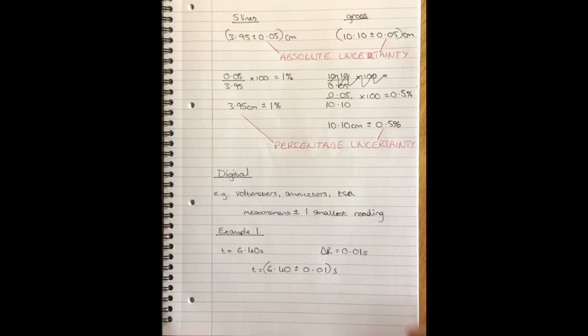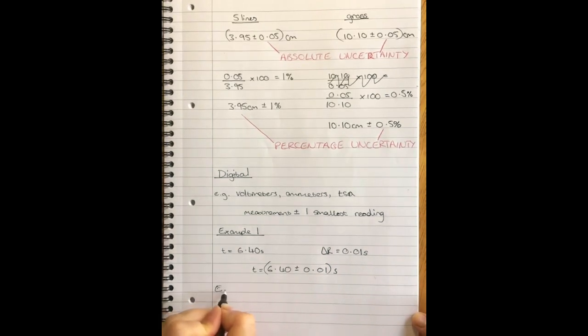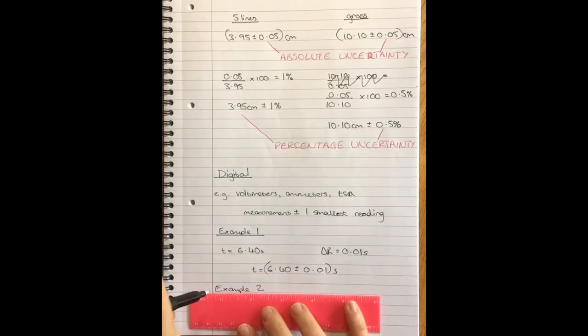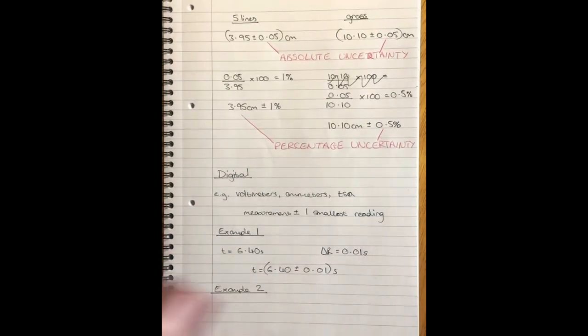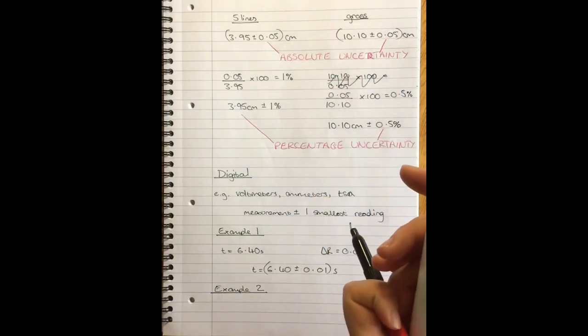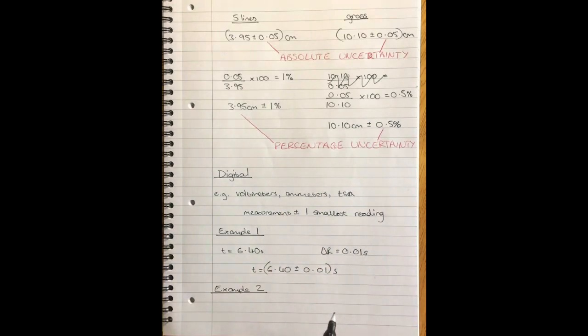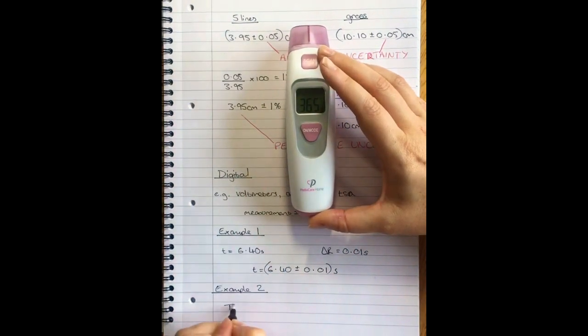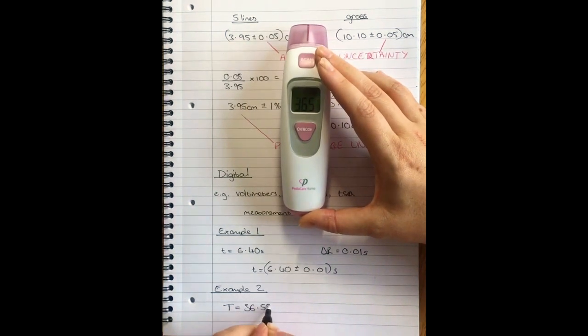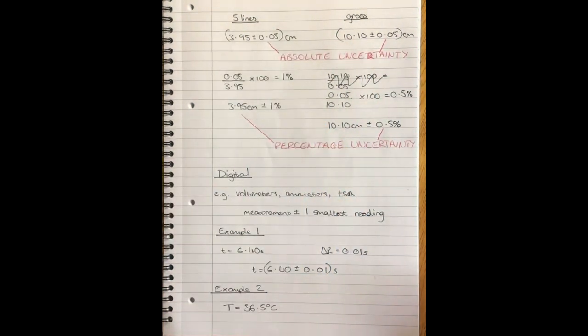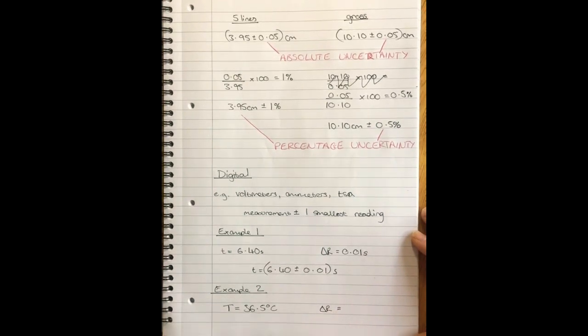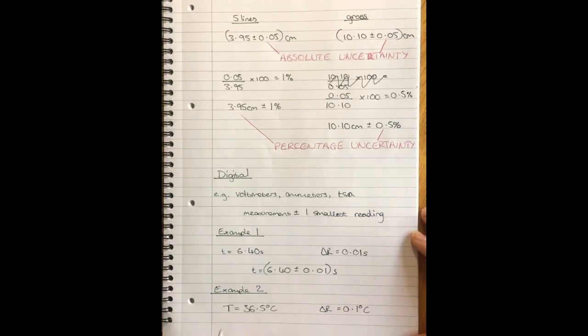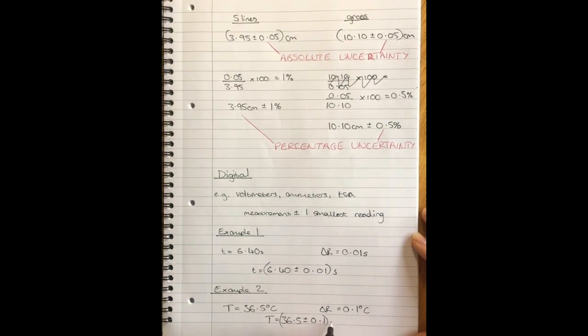Here's another example. I have another digital device here, it's an infrared thermometer. If I just take my own temperature, that's more like it. There's my temperature: 36.5. So T equals 36.5 degrees C. My reading uncertainty is 0.1 degrees C. I've only been given information to a single decimal place, so T equals 36.5 plus or minus 0.1 degrees C.